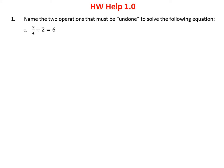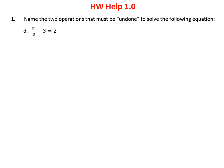Third problem: we have x divided by 4. That sign means divide by 4, so we're going to have to undo a division. And then they added 2, so we're going to have to undo the addition. Next problem: the variable is m divided by 3, so I'm going to have to undo division. And then I have subtract 3, so I'm going to have to undo subtraction.